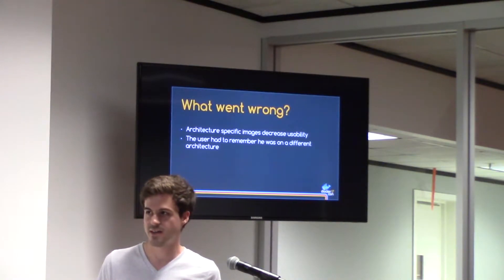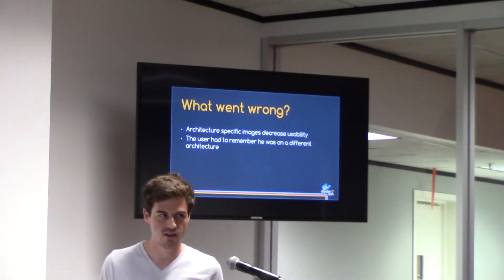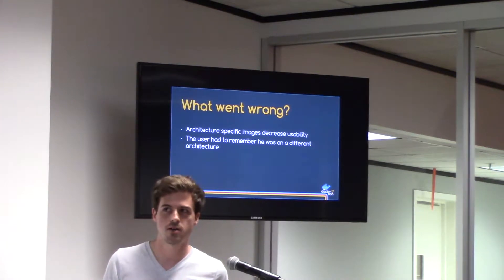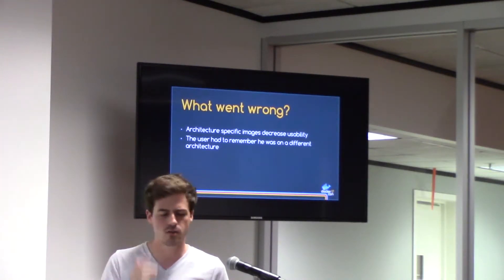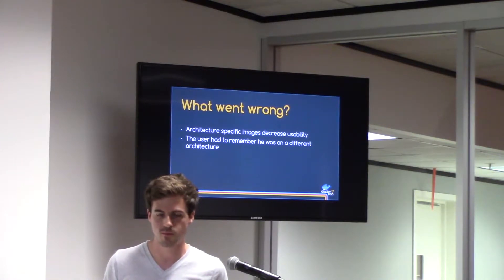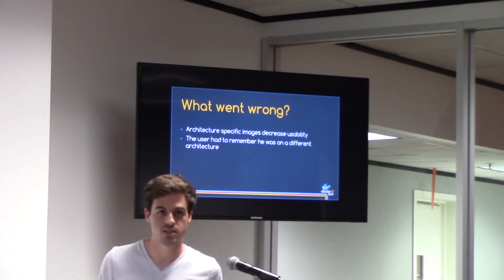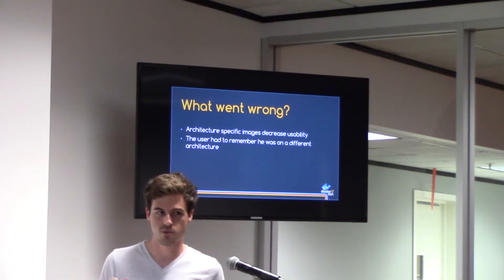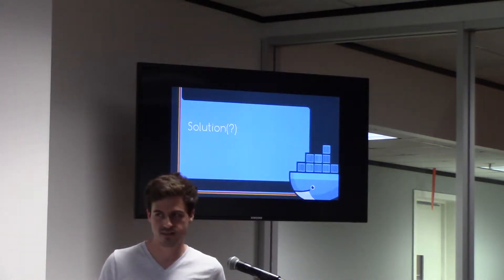Why is this a big problem? First off, it greatly harms usability. Every single time you do a Docker run, you now have to remember what architecture you're on. If you're on x86 it's just regular Ubuntu, but if you're on something like a Raspberry Pi or S390X, you have to know the prefix — s390x/ubuntu or armhf/ubuntu. We get lots of bugs from people saying a power image doesn't work, and it's because it's an x86 image. The user had to remember every single time that they're on another architecture.